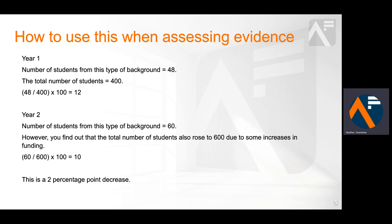When you get hold of the data, you find that the actual number of students from this type of background in year one was 48 and that the total number of students was 400 — this is 12%. For year two, you find that the actual number of students from this type of background increased to 60. However, you find out that the total number of students also rose to 600 due to some increases in funding. This means that students with this type of background now make up 10% of the total student population. This is a 2 percentage point decrease.